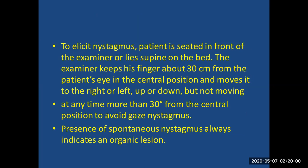To elicit nystagmus, the patient is seated in front of the examiner or lies supine on the bed. The examiner keeps a finger about 30 cm from the patient's eye in the central position and moves it to the right, left, up, or down — but not more than 30 degrees from the central position at any time, to avoid gaze-induced nystagmus. The presence of spontaneous nystagmus should indicate a sign of organic lesion.